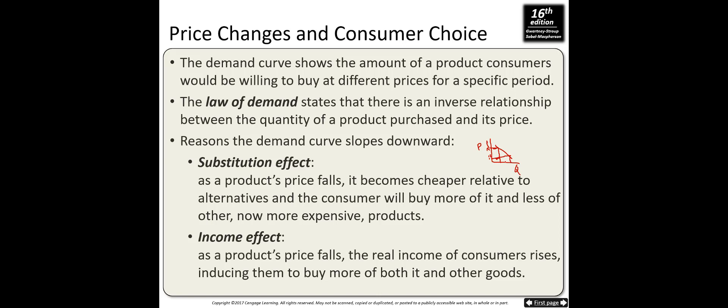There are two reasons for this. First, the substitution effect: as a product's price falls, it becomes cheaper relative to alternatives, and consumers will buy more of it and less of now more expensive products. Second, the income effect: as a product's price falls — say your rent goes down by $100 — you have $100 extra per month to spend on other goods, giving you more purchasing power.